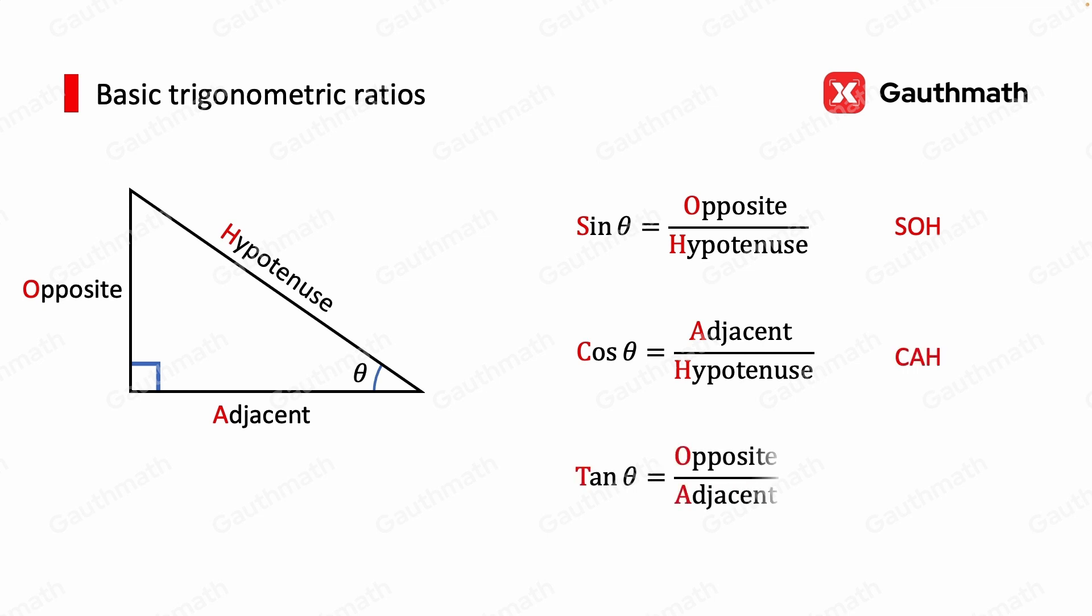Finally, tangent theta is equal to opposite over adjacent, TOA. You can easily remember those three ratios using SOHCAHTOA.